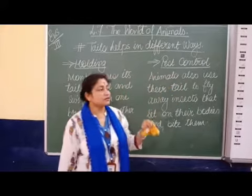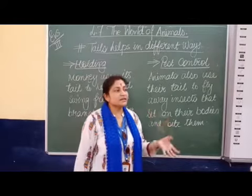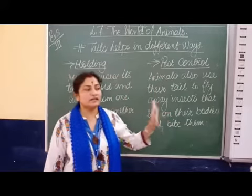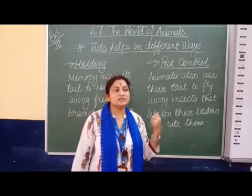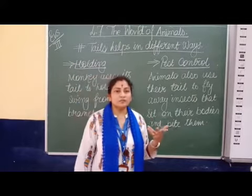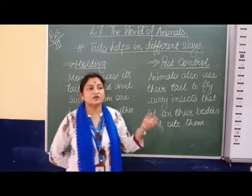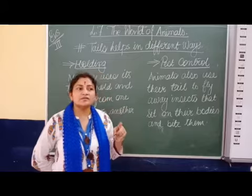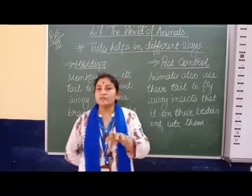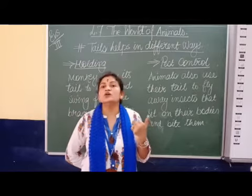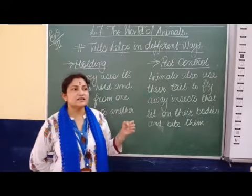And then we talk about pest control. Pest control means the animals use their tail to fly away insects that sit on their body and bite them. After every moment they keep on moving their tails. You must have seen buffaloes and horses moving their tails often — because they get irritated by small flies or insects that sit on their body and bite them. You can recall from your chapter about Piku, which is an animal with a small tail, and it also uses its tail to fly away pesky flies. So animals use the tail to drive away insects from their body.